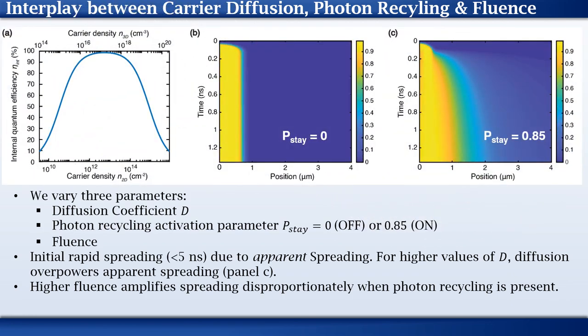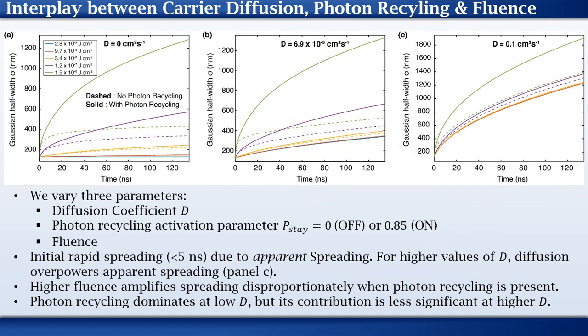This is actually due to a high internal quantum yield as we can see in these plots where PL emission is higher. However, increasing values of D eventually appears to overpower this effect as clearly seen in panel C.